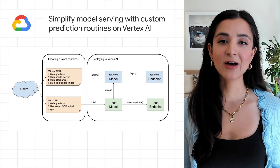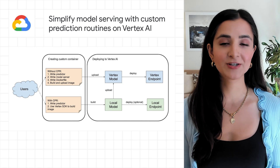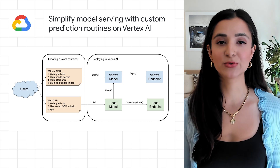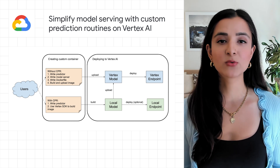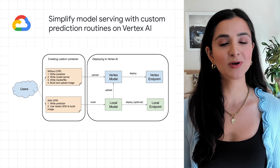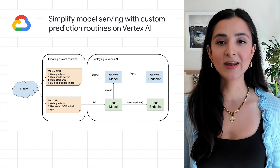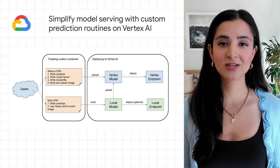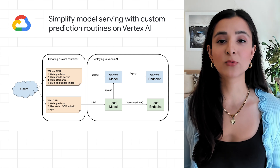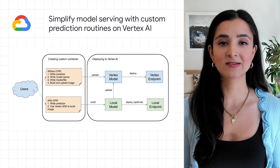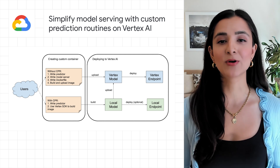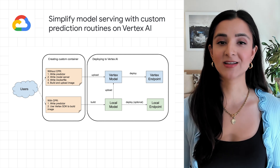Google Cloud's managed machine learning platform, Vertex AI, now includes custom prediction routines, which simplify the process of writing pre- and post-processing code. When getting predictions from machine learning models, the data received at serving time is rarely in the format your model expects. Transforming the data can be as important as the prediction itself.